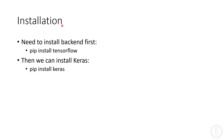Let's see how we can install Keras. Keras needs to use some sort of library for low-level computations in the background. We don't have to use this directly, however we can, and that will allow us to have even more freedom in defining our neural networks. One popular backend to use is TensorFlow. We install this using pip install tensorflow, and then we can also install Keras with pip install keras.